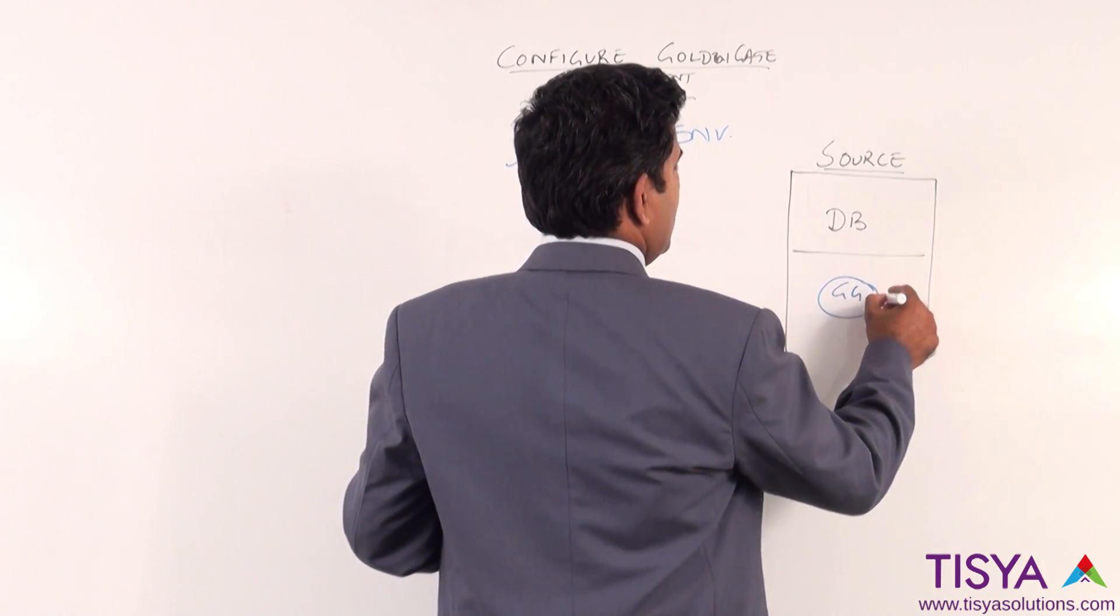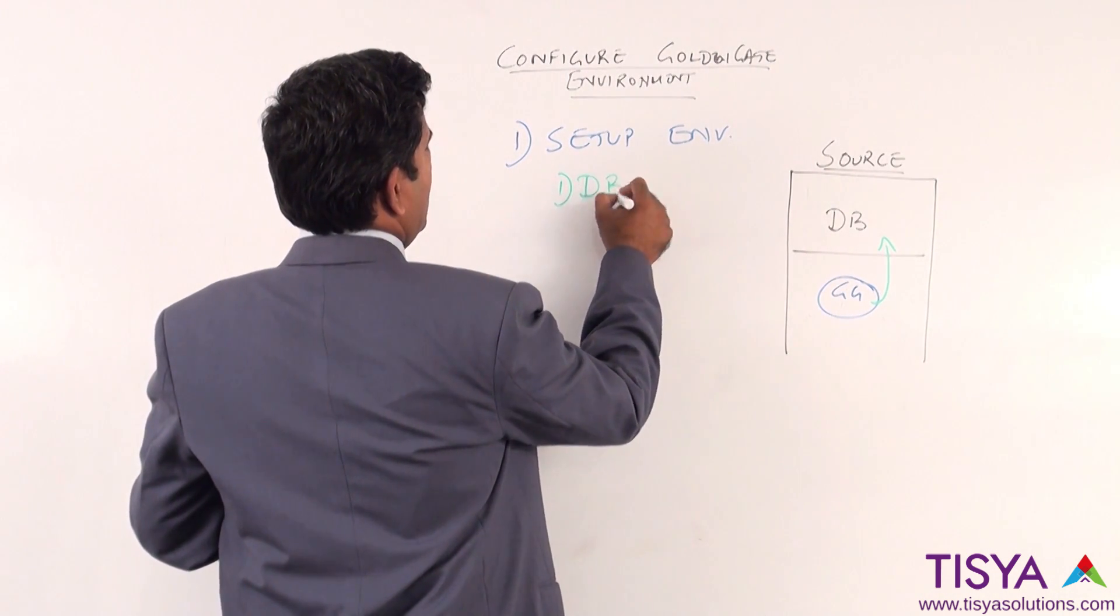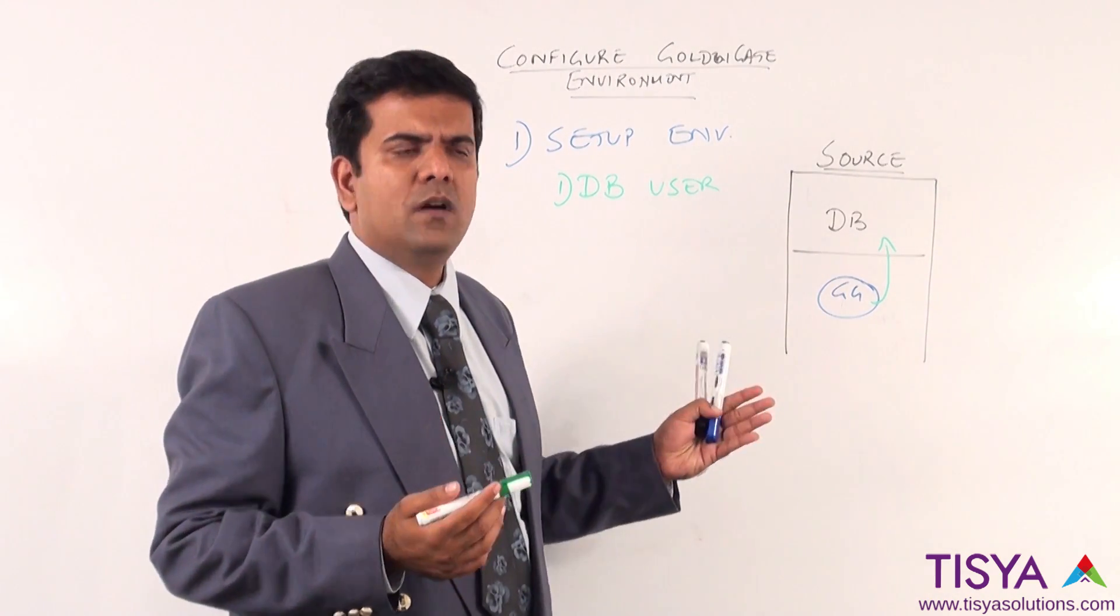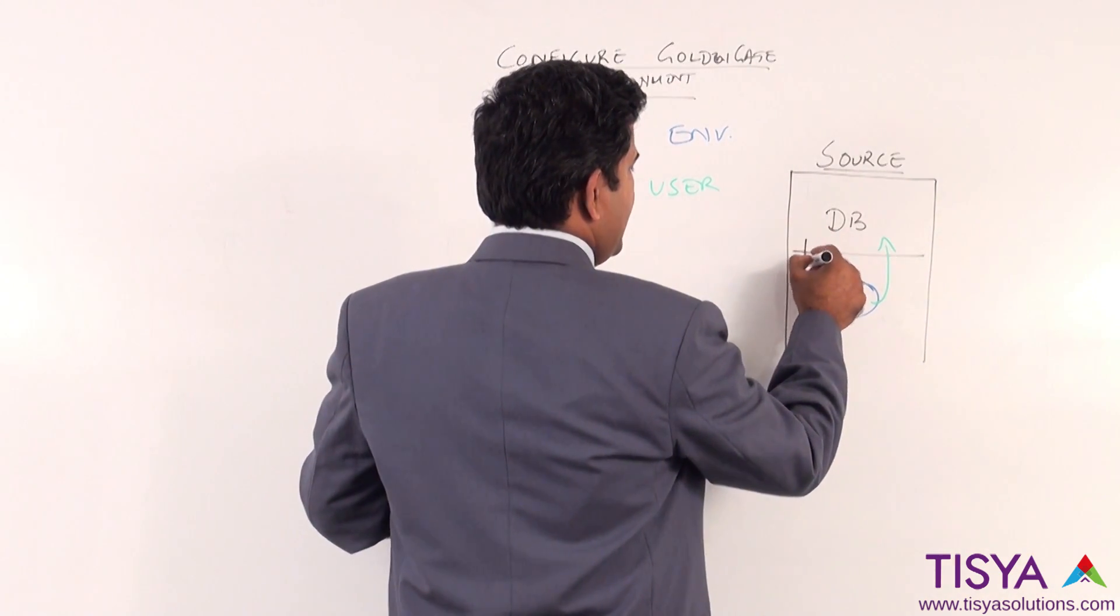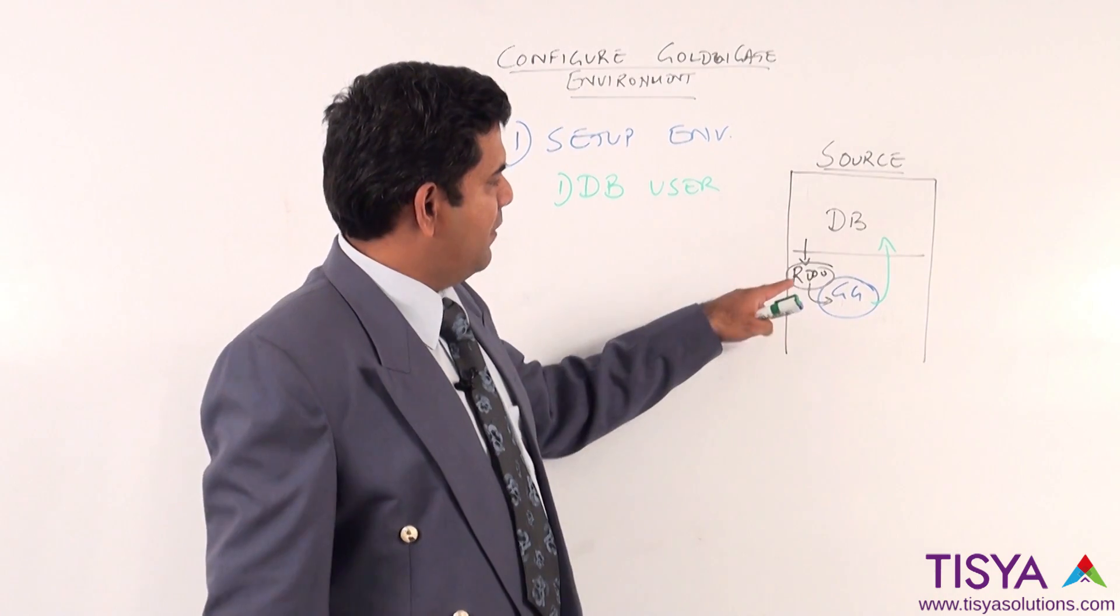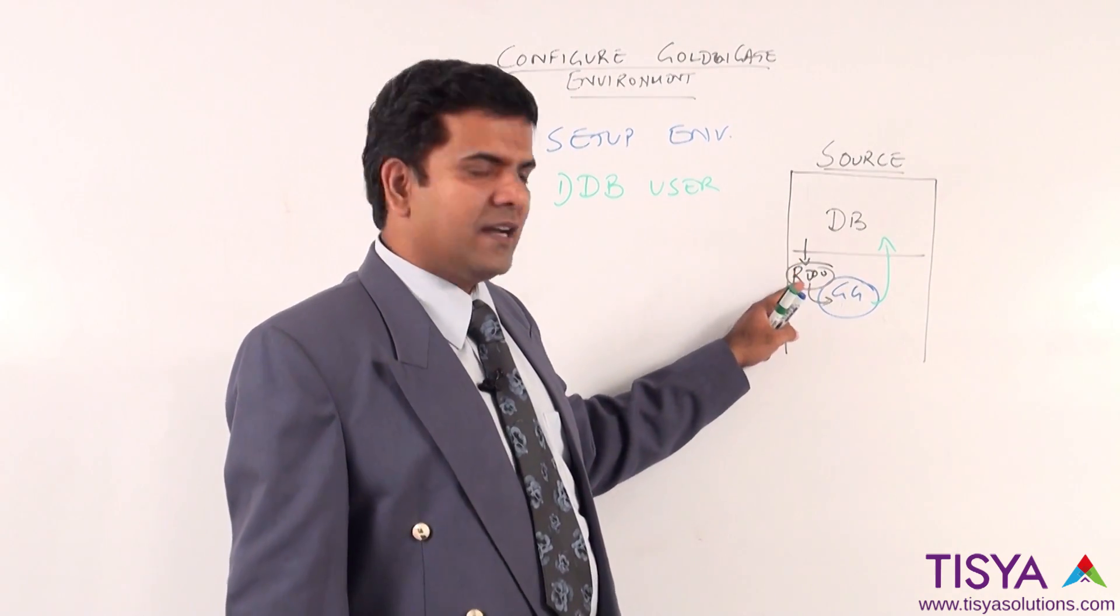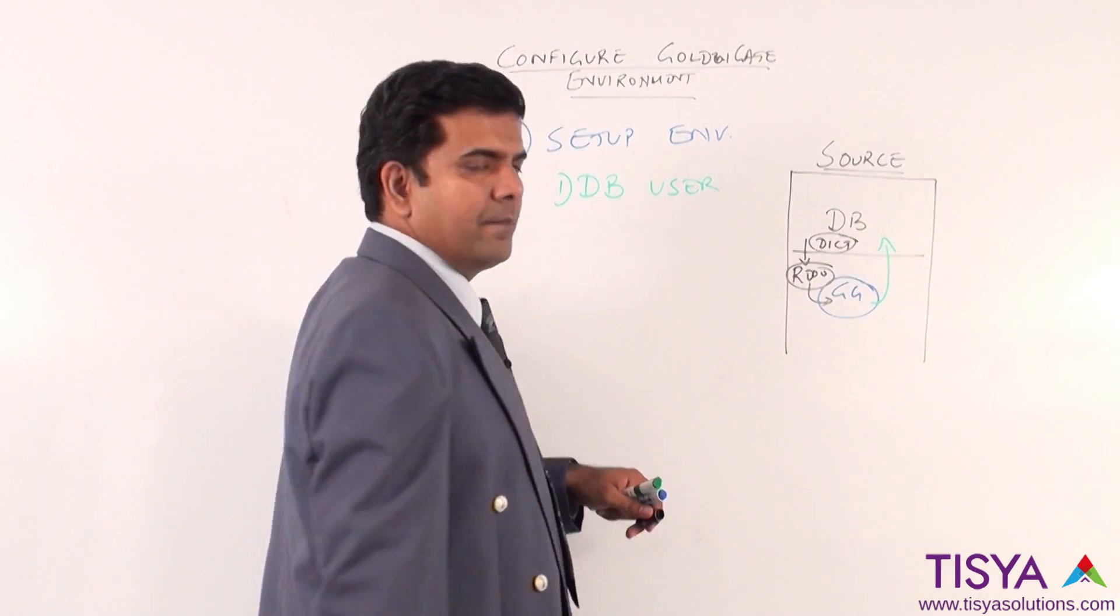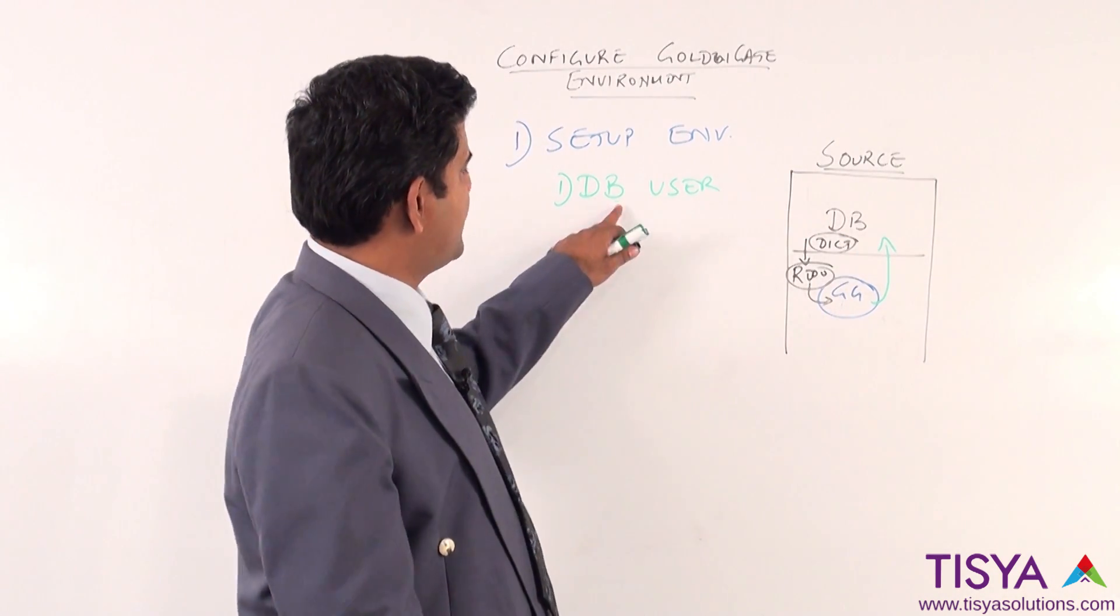The Golden Gate software would have to access the database for which a DB user would have to be created. You might be wondering why would Golden Gate log into the database. Please remember Golden Gate is going to read from redo log files that are generated and whenever the redo is being looked at, it will only have information about an object ID. The information about object ID and the object name will be available inside the dictionary. So, Golden Gate would have to log into the database to get the information about the object name for which we need to create a user.